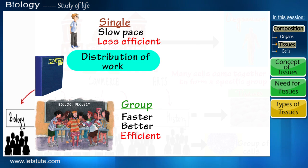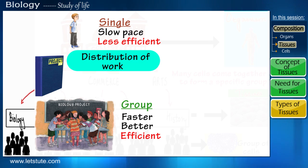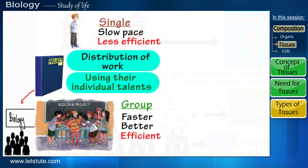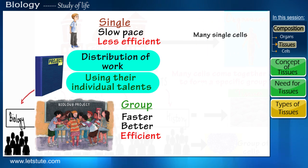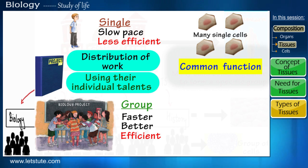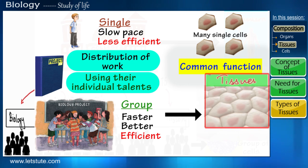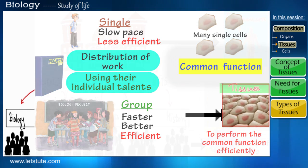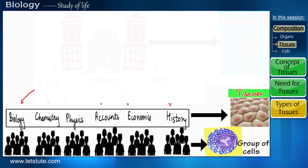Using individual talents to make the project better. Similarly, many cells with a similar function come together to form a group called tissues, which will perform that common function efficiently.